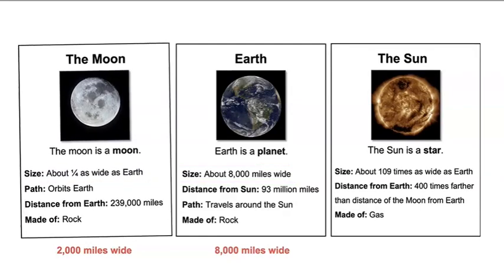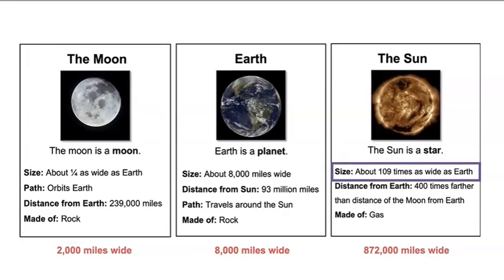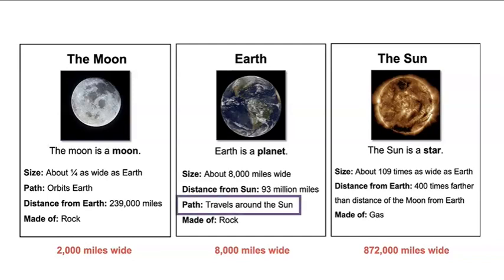How does the size of the moon compare to the size of the sun? Well, the sun is 109 times as wide as Earth, and Earth is about 8,000 miles wide. That means the sun is about 872,000 miles wide. Wow — so the moon is much smaller than the sun. Earth orbits the sun, and the moon orbits Earth. Let's use this information to make a model of the sun, Earth, and the moon.